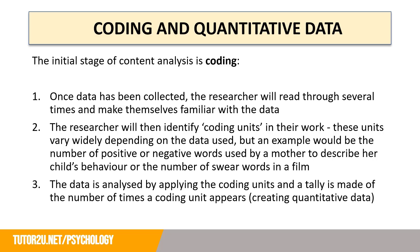The initial stage of all content analysis is coding. Coding is where you turn your data into quantitative data systematically. Once data has been collected, the researcher will read through it several times to become familiar with it. The researcher will then identify coding units. These vary widely depending on the data used, but an example would be the number of positive or negative words used by a mother to describe her child's behaviour, or the number of swear words in a film. The data is analysed by applying the coding units and a tally is made of the number of times a coding unit appears, which is how quantitative data is created.